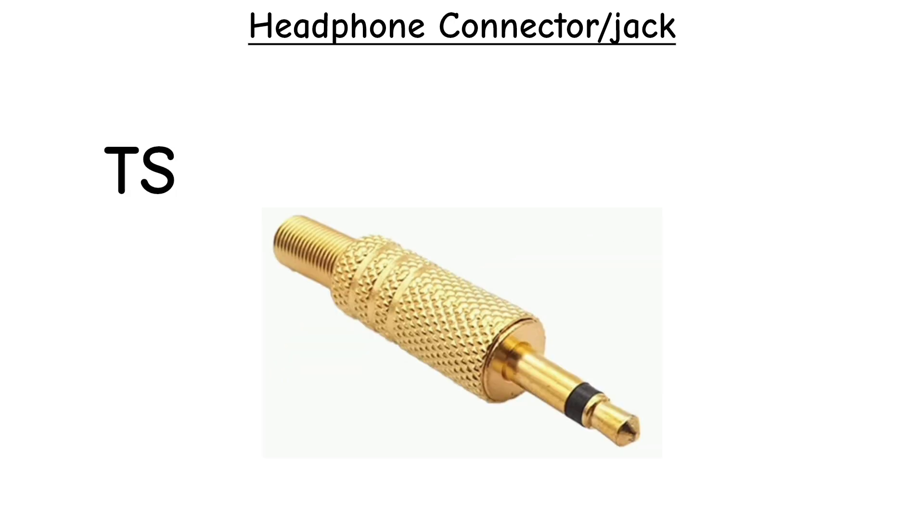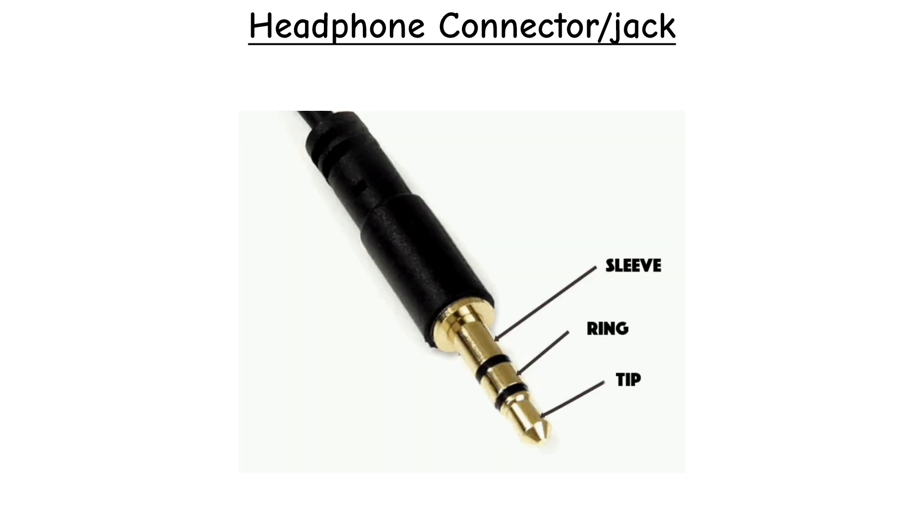The simplest form is the TS, or tip sleeve connector, usually in 6.35mm size, which handles unbalanced mono signals such as electric guitars. Adding one ring creates TRS, or tip ring sleeve, most often in 3.5mm.